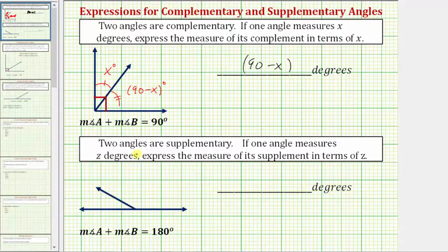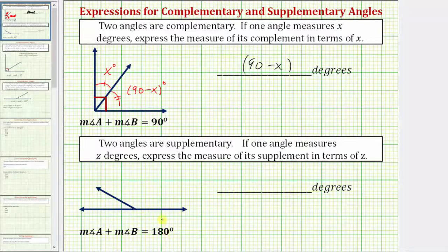Next, we're told two angles are supplementary. If two angles are supplementary, the sum of their measures equals 180 degrees, which means if we were to combine the two angles as shown here, they would form 180 degrees, or a straight angle. So this angle and this angle are supplementary.